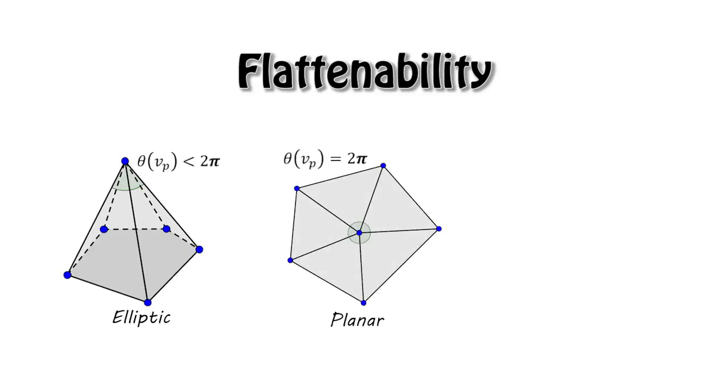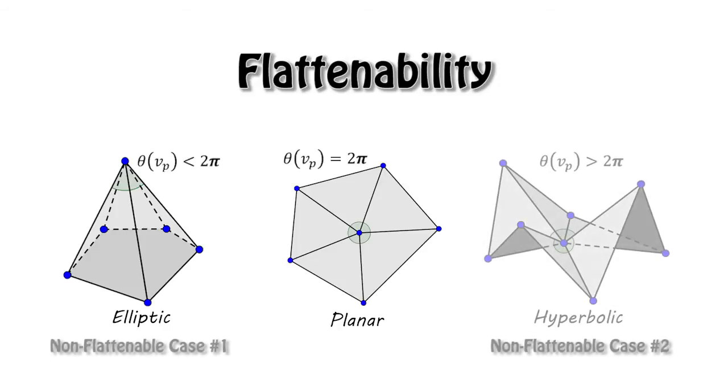The sum of incident angles around a vertex must be equal to 2π if it is flattenable. It is non-flattenable as well if the sum of incident angles is greater than 2π. Now, the problem is how do we fabricate a surface that is non-flattenable through a 2D pattern?